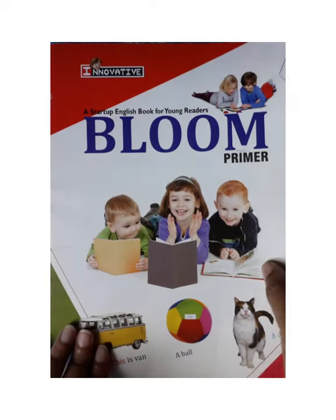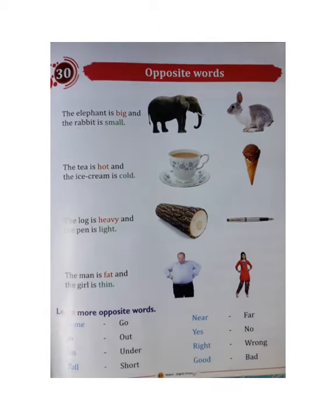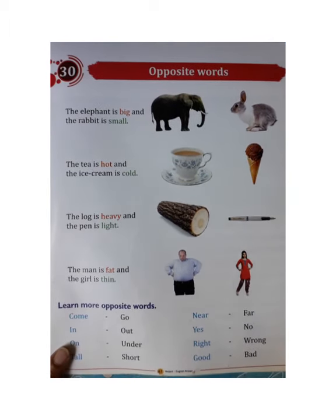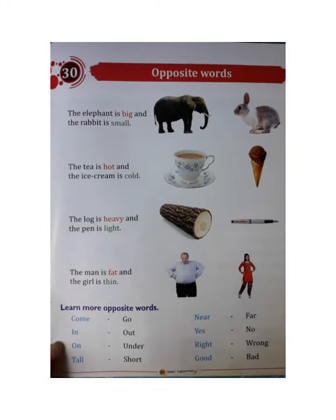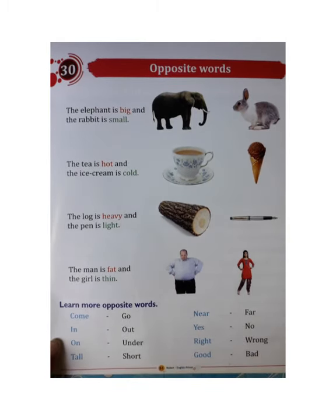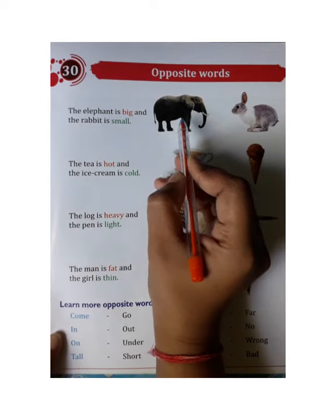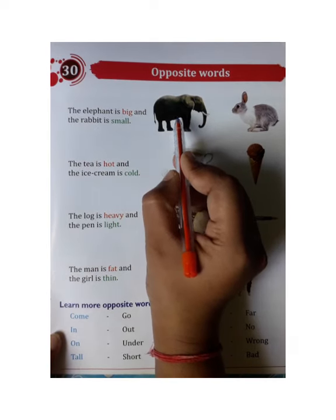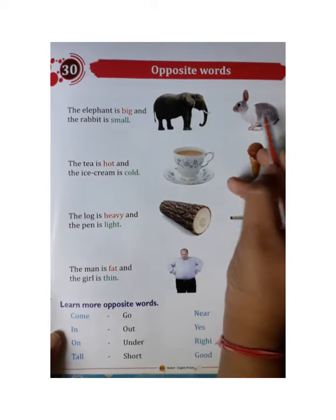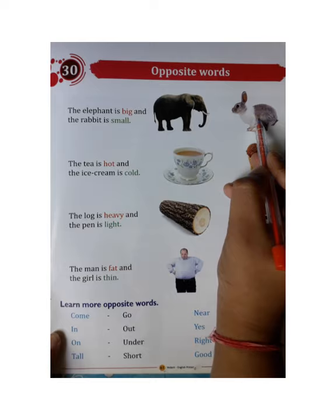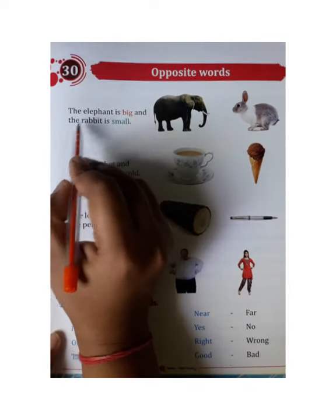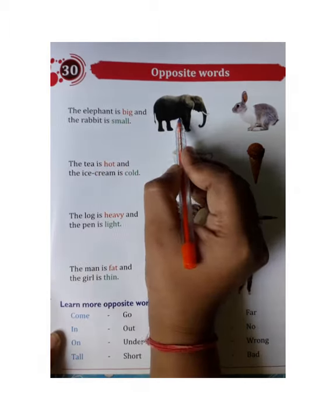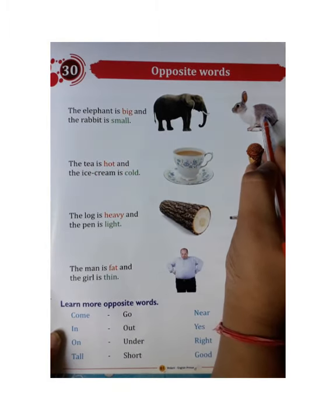Now I am showing you your English book. We will open page number 61 in this book. This is page number 61, Chapter 13 — Opposite words. You can see the elephant. Elephant is big. Rabbit is small. The elephant is big and the rabbit is small. Toh big ka opposite kya ho gaya? Small.